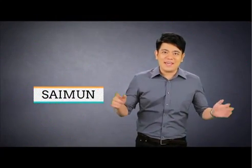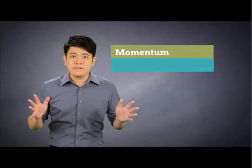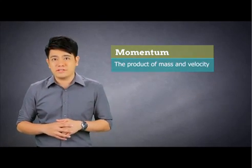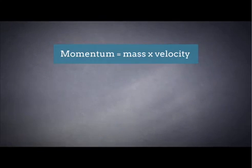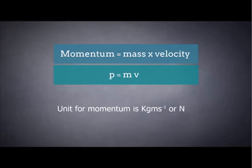Hi, I'm Mr. Simon and today our focus is conservation of momentum. Momentum is defined as a product of mass and velocity. The formula is easy: P equals mV. Therefore, the unit is kg meters per second or newton seconds. Momentum depends on the mass and velocity.